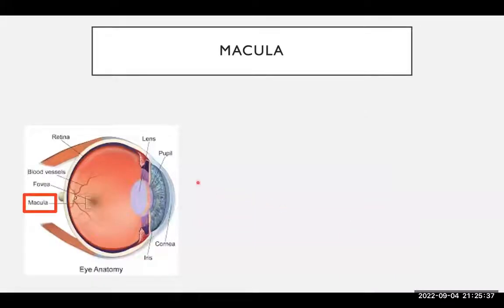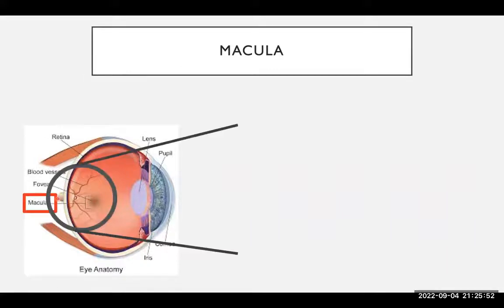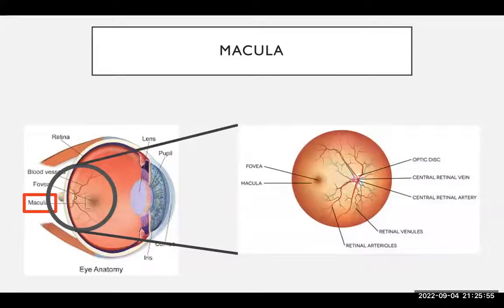Looking at a picture of the eye again — this is the front of the eye and this is the back of the eye. The retina is the whole inside layer of the eyeball, and it's the very central part of the retina which is called the macula. This white area here is called the optic nerve, which sends impulses to the brain, and this area in the middle is called the macula. The very center of the macula is called the fovea.